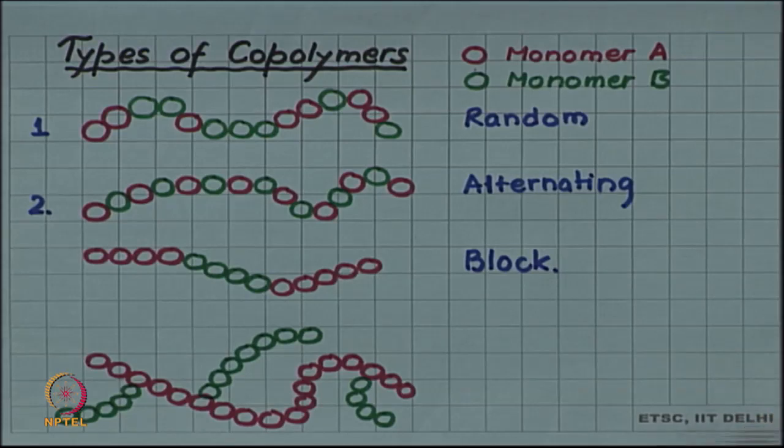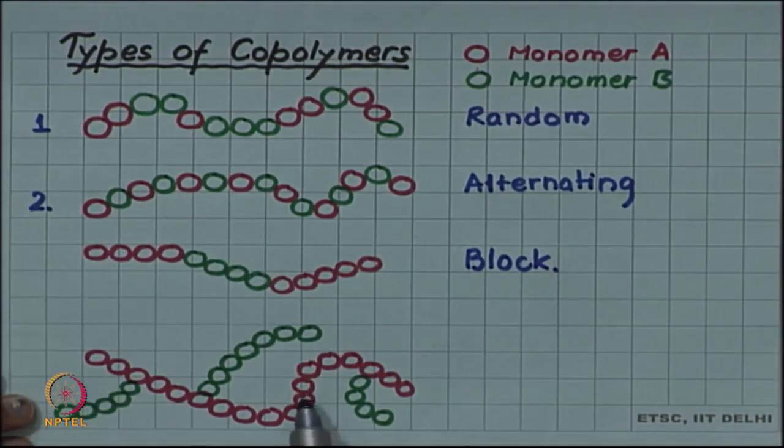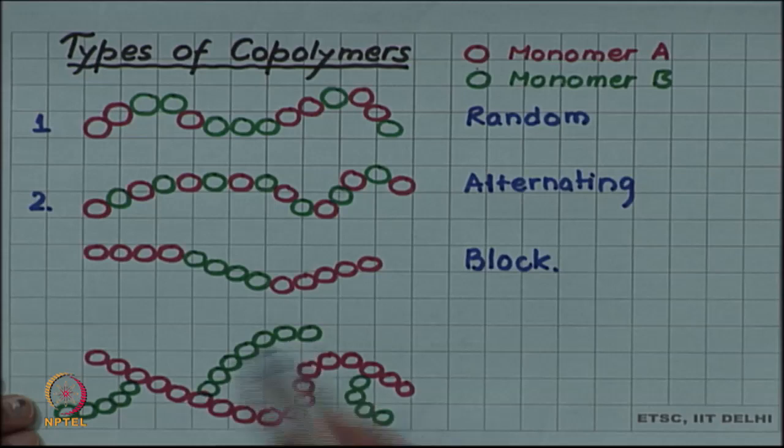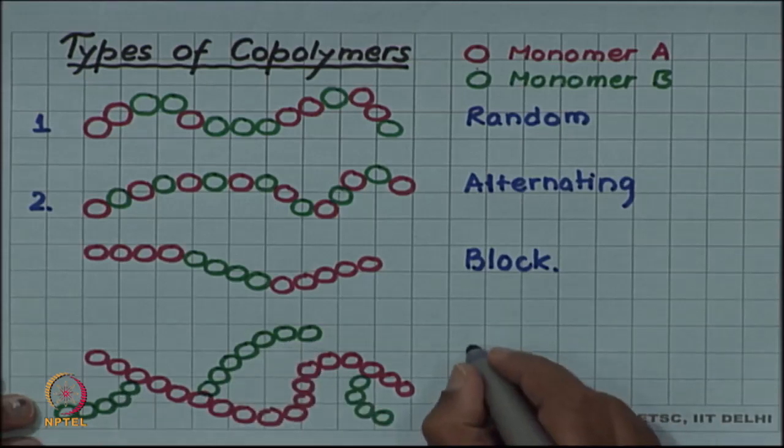And here you can see that A is forming a continuous chain in which B is appearing as branches. This is called a branched copolymer.